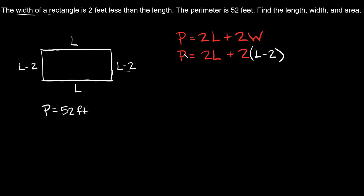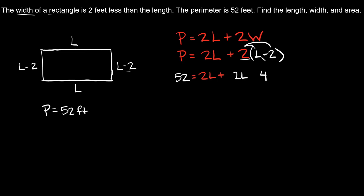Let's solve for L. The perimeter is 52 feet, so 52 is equal to 2L plus 2 times (L minus 2). We take the 2 and distribute it into the parentheses: 2 times L equals 2L, and 2 times 2 equals 4, and since we're subtracting, we bring that straight down. So we have 52 equals 2L plus 2L minus 4. Combining like terms: 2L plus 2L equals 4L, so we have 52 equals 4L minus 4.